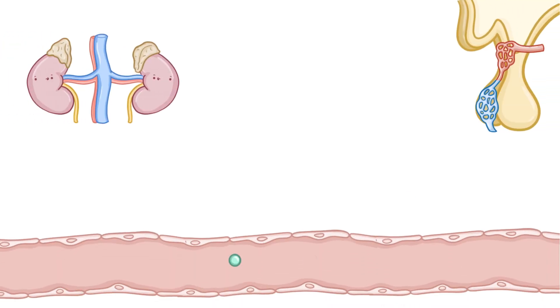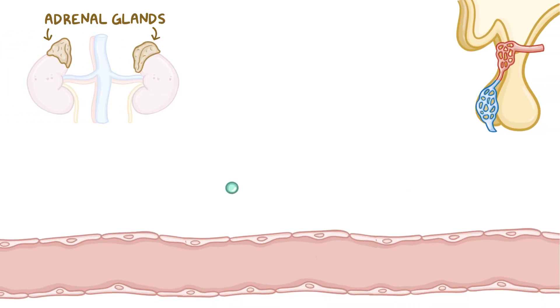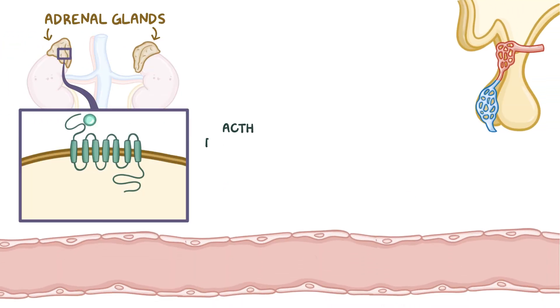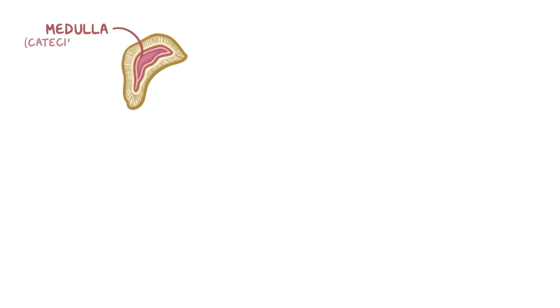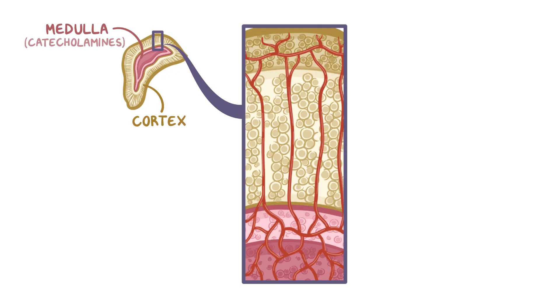When ACTH is released, it travels to the adrenal glands, which sit above each kidney, and binds to the ACTH receptor, also called melanocortin receptor 2, located in the membrane of their target cells, which are adrenocortical cells. Each gland is made up of an inner medulla, which secretes catecholamines, as well as an outer cortex. The adrenal cortex itself is divided into three zones, each one secreting a different steroid hormone.